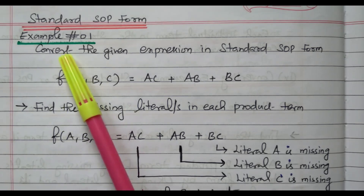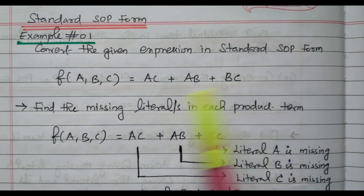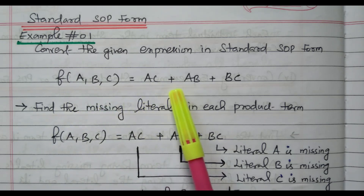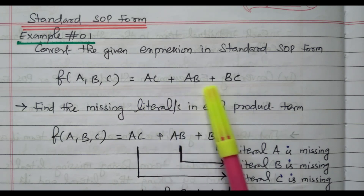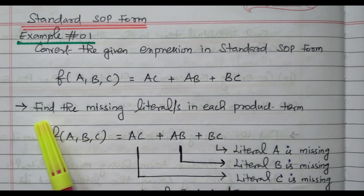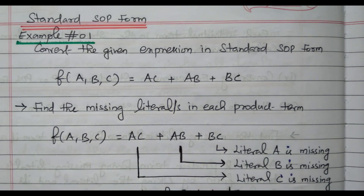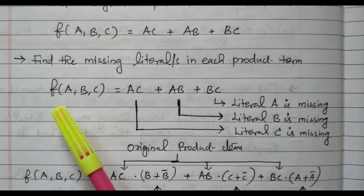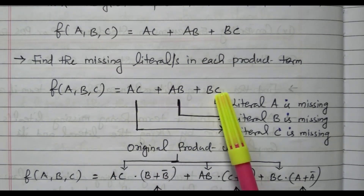In example one, we are converting the SOP form. Convert the given expression into standard SOP form. The given expression is F(A,B,C) = AC + AB + BC. Here, all the literals are not available in each term, so this is not a standard SOP form. We need to convert it into standard SOP form. First, we need to identify and find the missing literals in each product term.